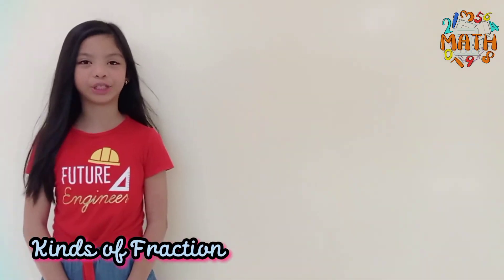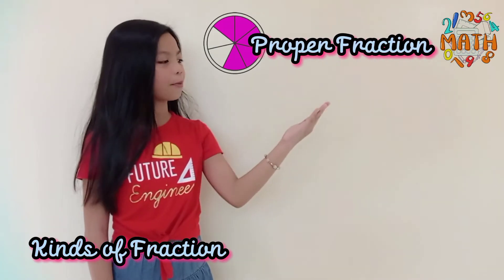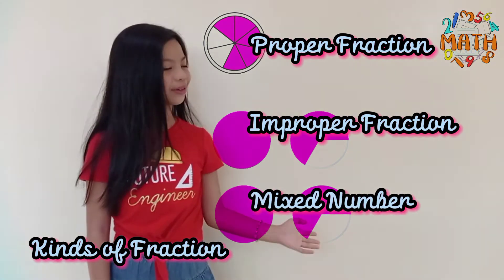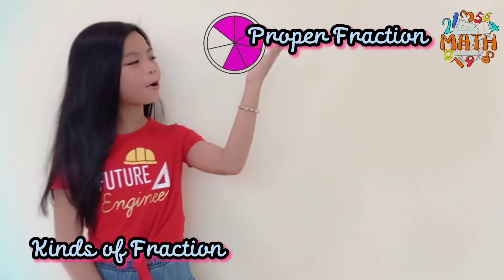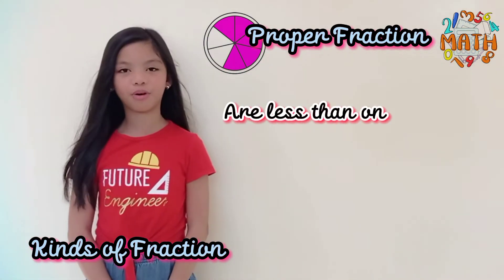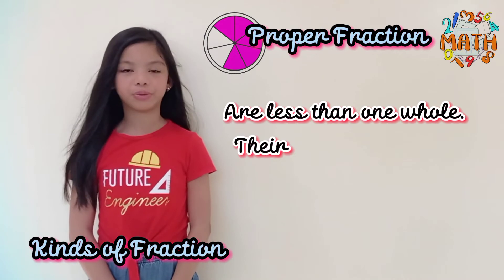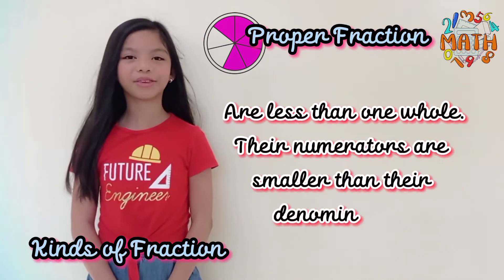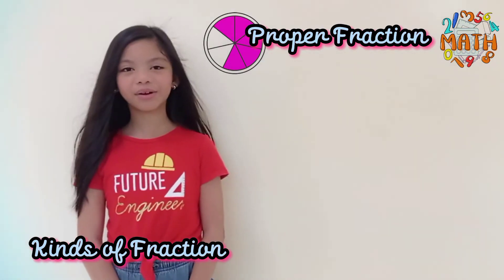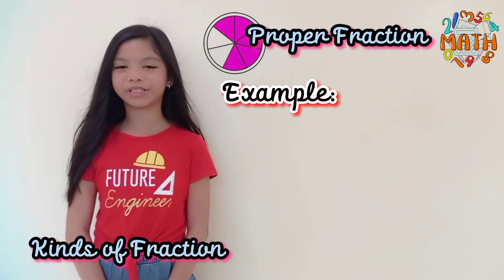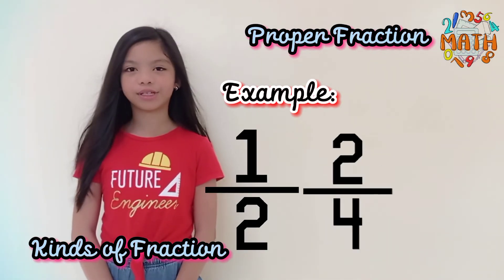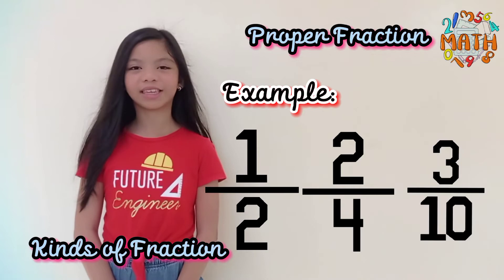We have three kinds of fractions: the proper fraction, the improper fraction, and a mixed number. A proper fraction is less than one whole. The numerator is smaller than the denominator. Here are the examples of proper fractions: one-half, two-fourths, and three-tenths.